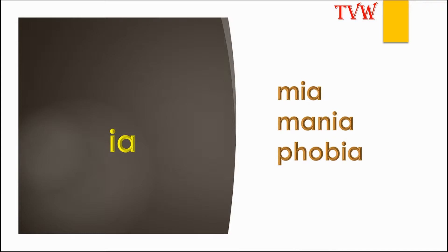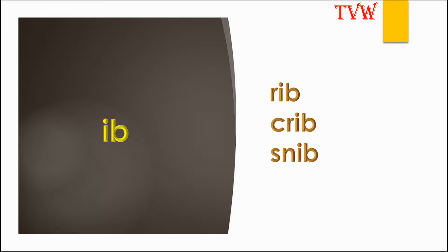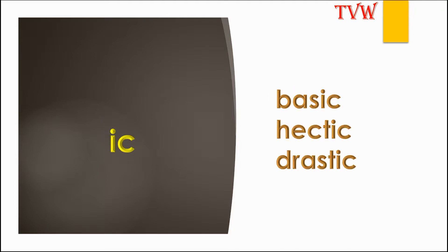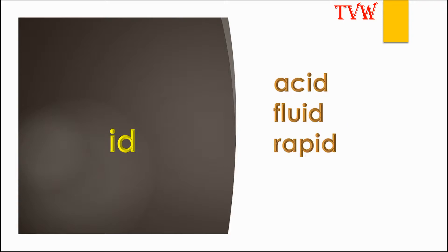The letters IA make the sound 'ya' as in Mia, mania, phobia. The letters IB make the sound 'ib' as in rib, crib, snib. The letters IC make the sound 'ic' as in basic, hectic, drastic.